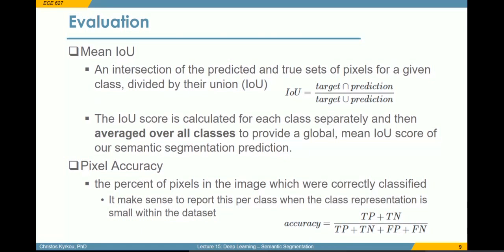Similarly, and perhaps in a simpler way, we have pixel accuracy — we count the number of pixels that were correctly classified. This is a valid metric, but again, when we have imbalances in the number of classes, this can be problematic.